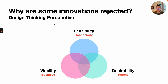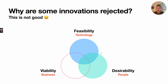From a design thinking perspective, we already talked about how we want to be, as designers, at the center of feasibility, viability, and desirability. We want to think about technology, we want to think about business, and we want to think about people.